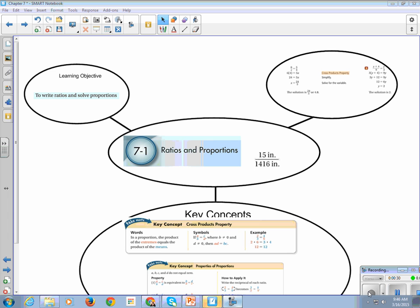All right, so this is Chapter 7, Section 1, Ratios and Proportions. This is an example of a proportion, so my little picture is of a proportion. Our learning objective is to write ratios and solve proportions.